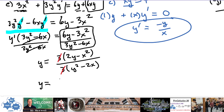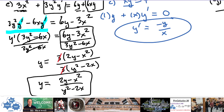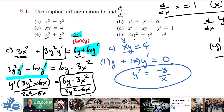Now simplify — there are threes and sixes throughout. Factor a three out of the numerator to get (2y minus x squared), and a three out of the denominator to get (y squared minus 2x). Those threes cancel by common factor, leaving y prime equals (2y minus x squared) over (y squared minus 2x). For 6xy, since there's both an x and a y multiplied together, we must treat it as two separate factors and use product rule.